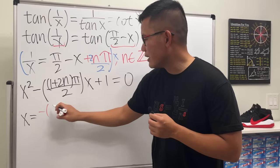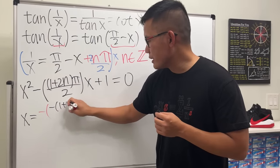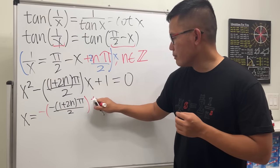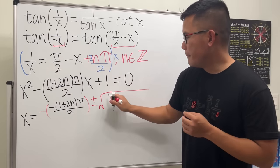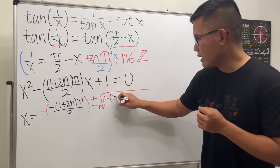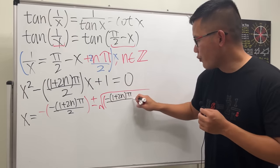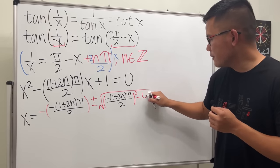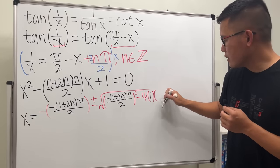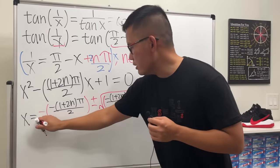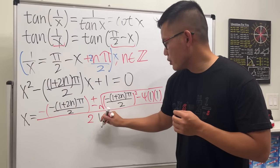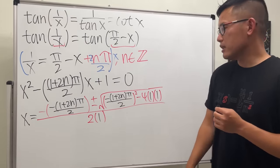Now let's set up the quadratic formula. x equals negative b, so that's negative of (1 + 2n)π/2, plus or minus the square root of b squared — which is [(1 + 2n)π/2]² — minus 4ac, where a = 1 and c = 1, so just 1 times 1. All over 2a, which is just 2 times 1.